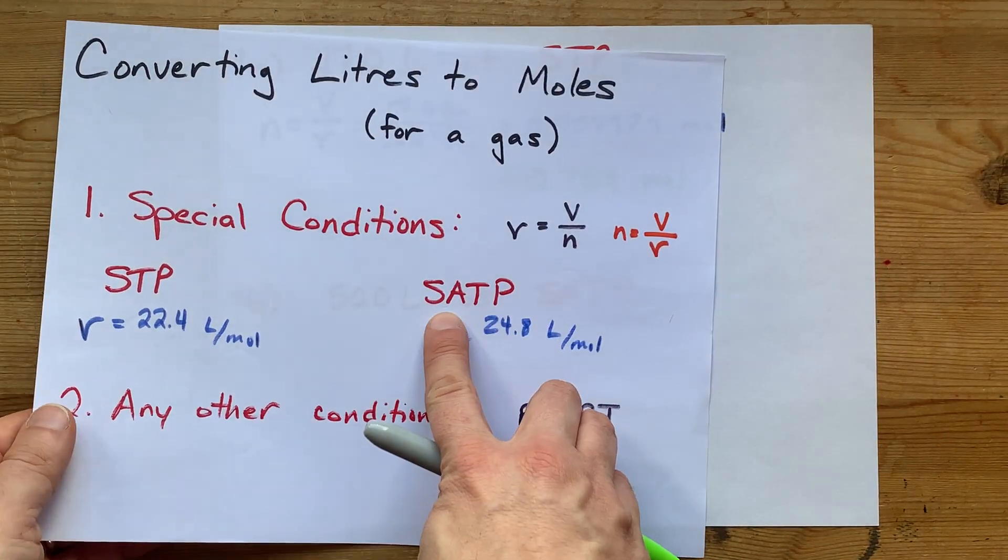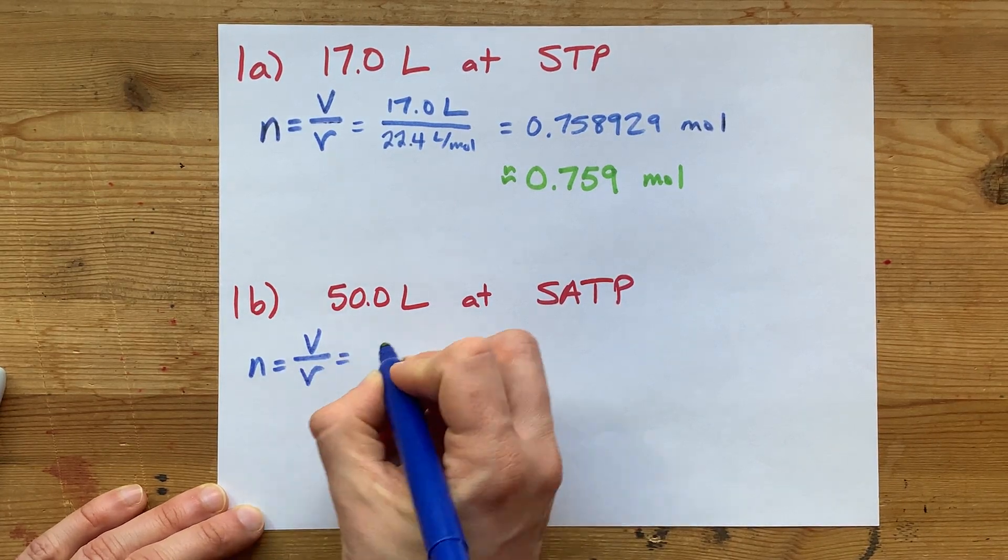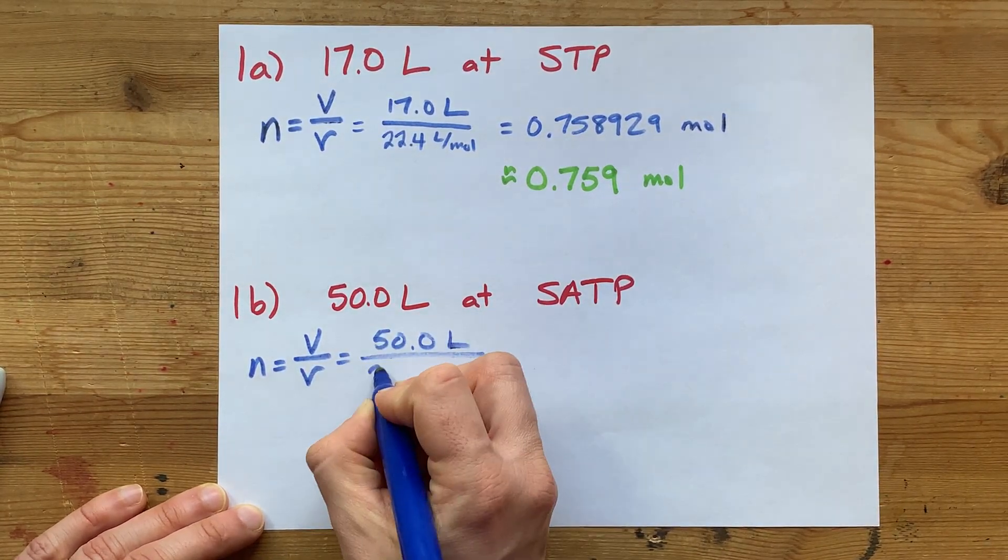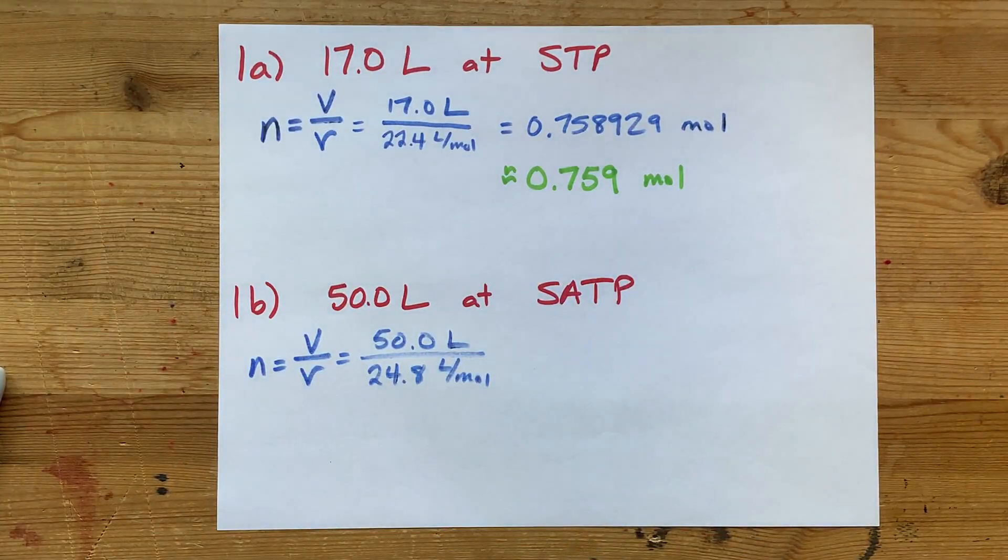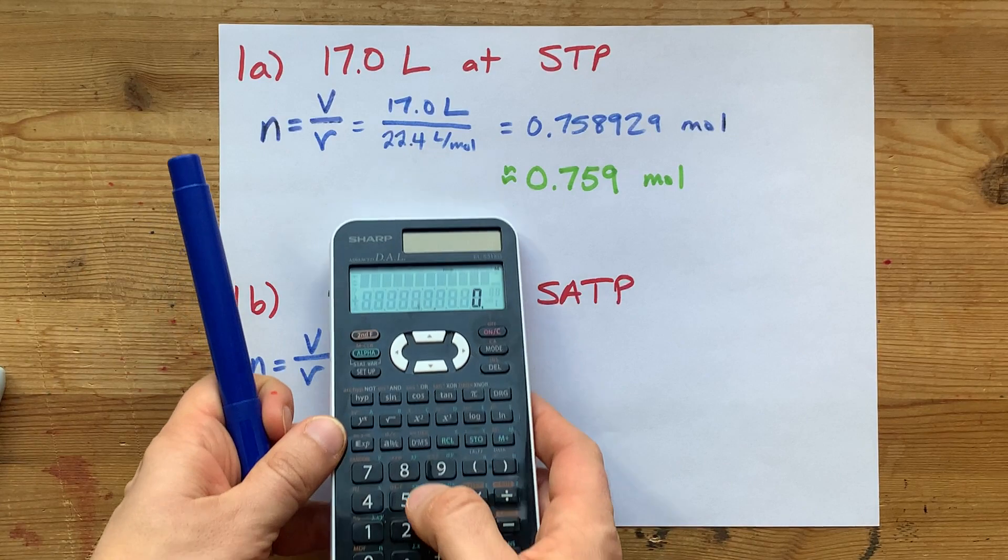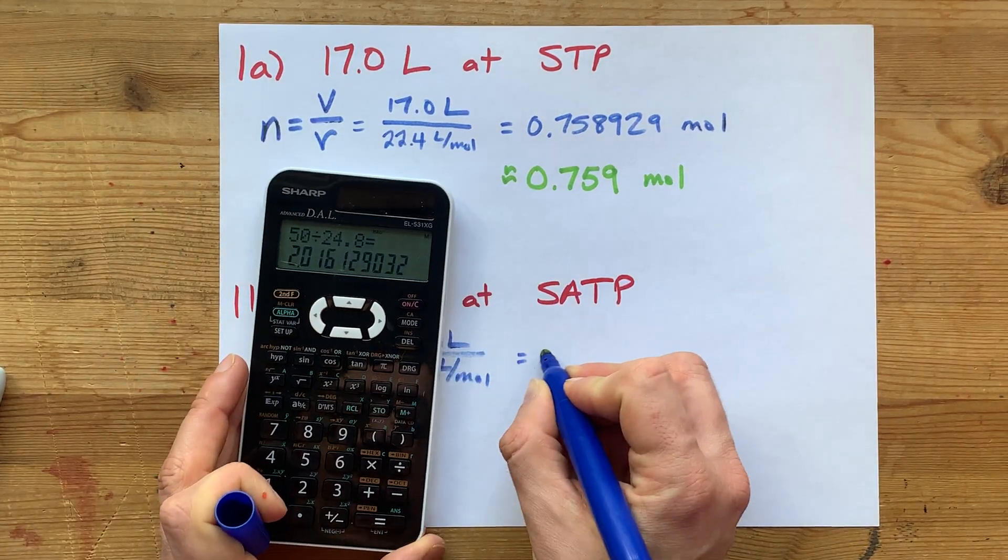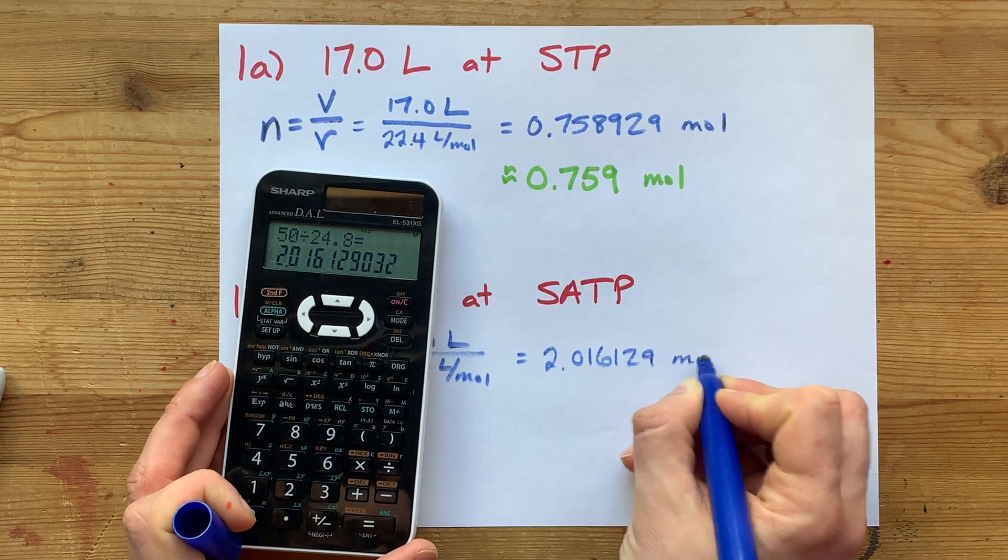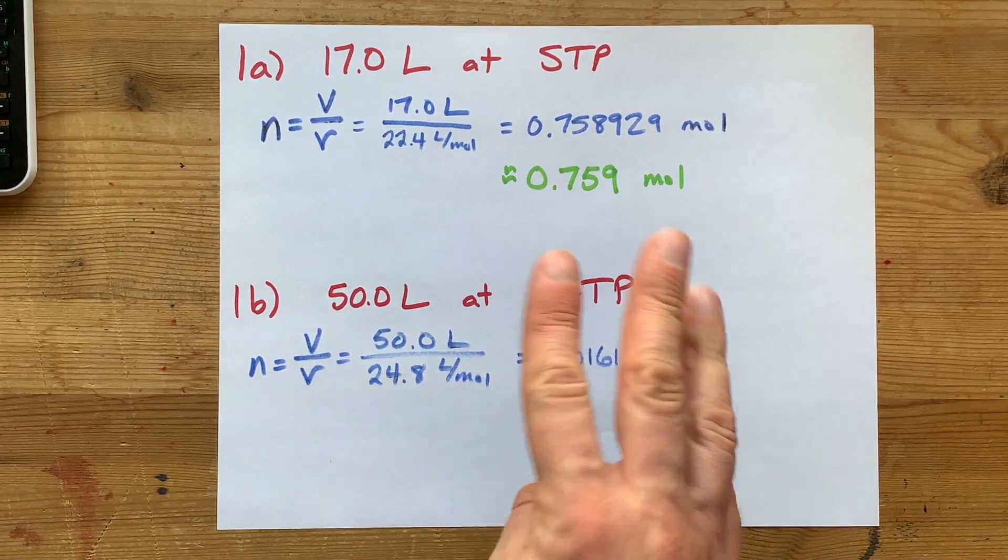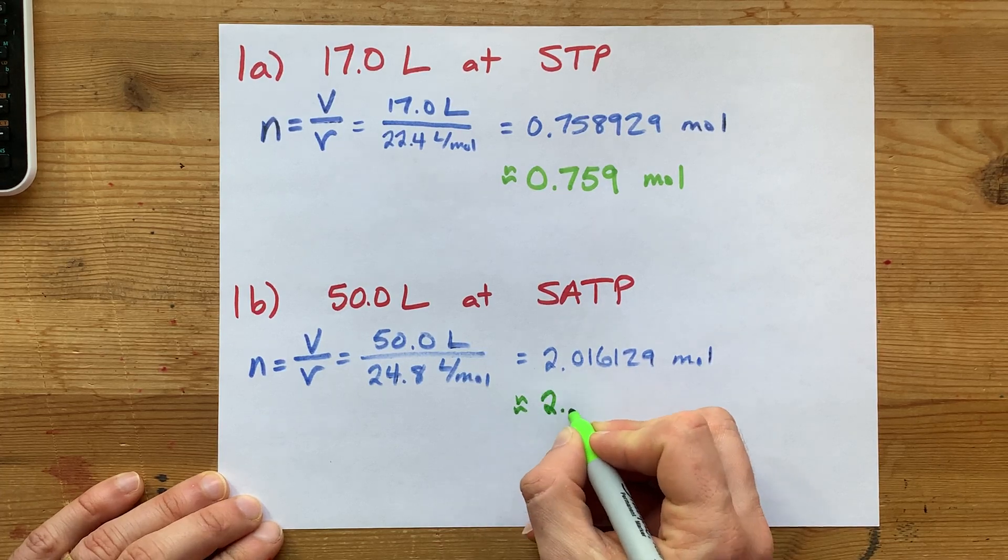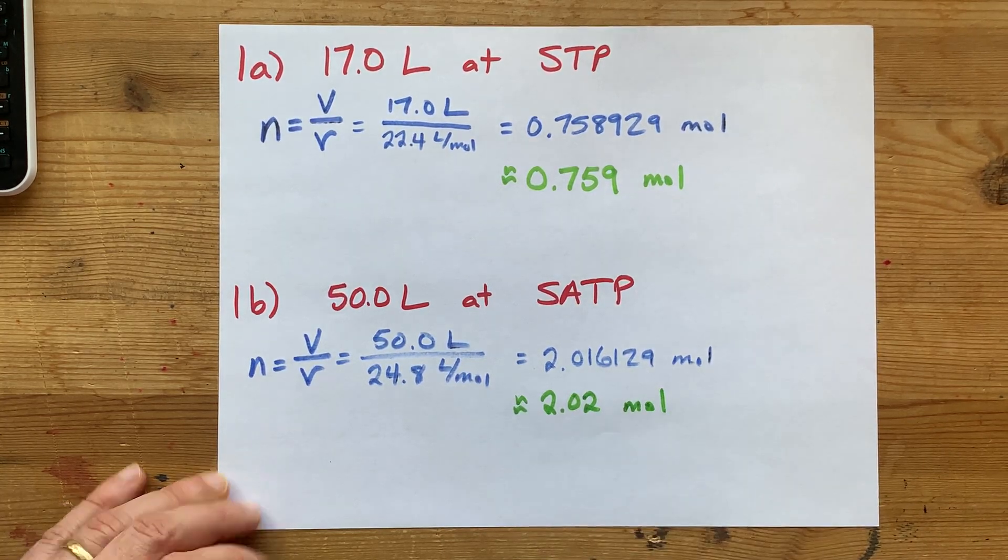Now at SATP, which has a different molar volume constant, but the method is the same. Volume divided by molar volume: 50 liters divided by 24.8 liters per mole. Using a calculator, 50 divided by 24.8 equals 2.016129 moles. With significant figures, both have three, so I need three in my final answer. Rounding up: 2.02 moles.